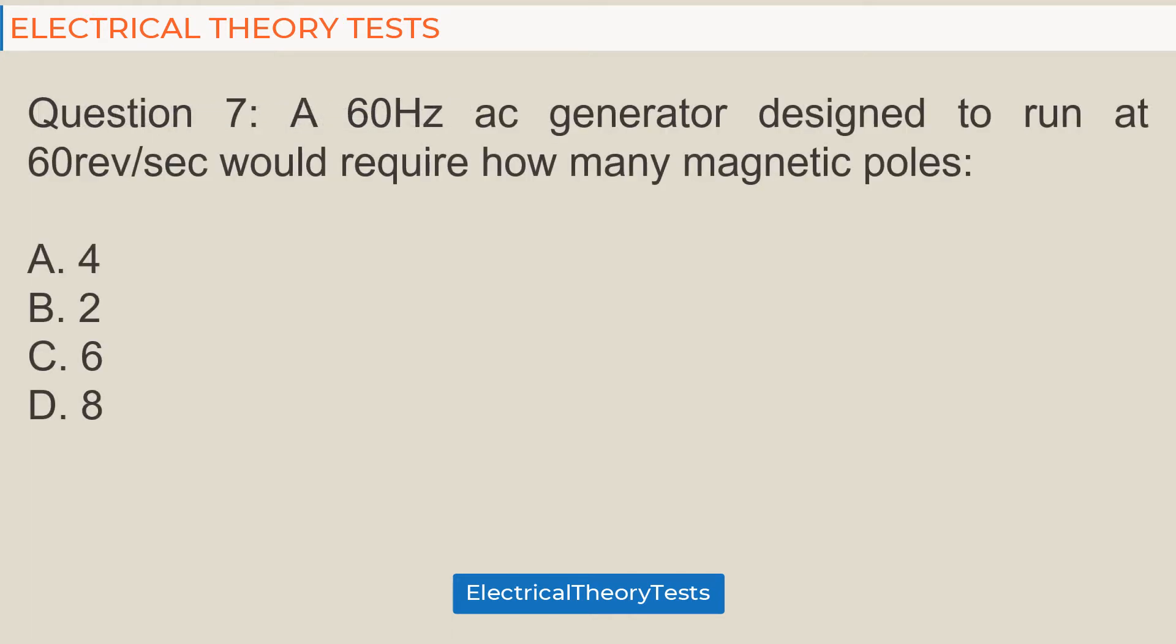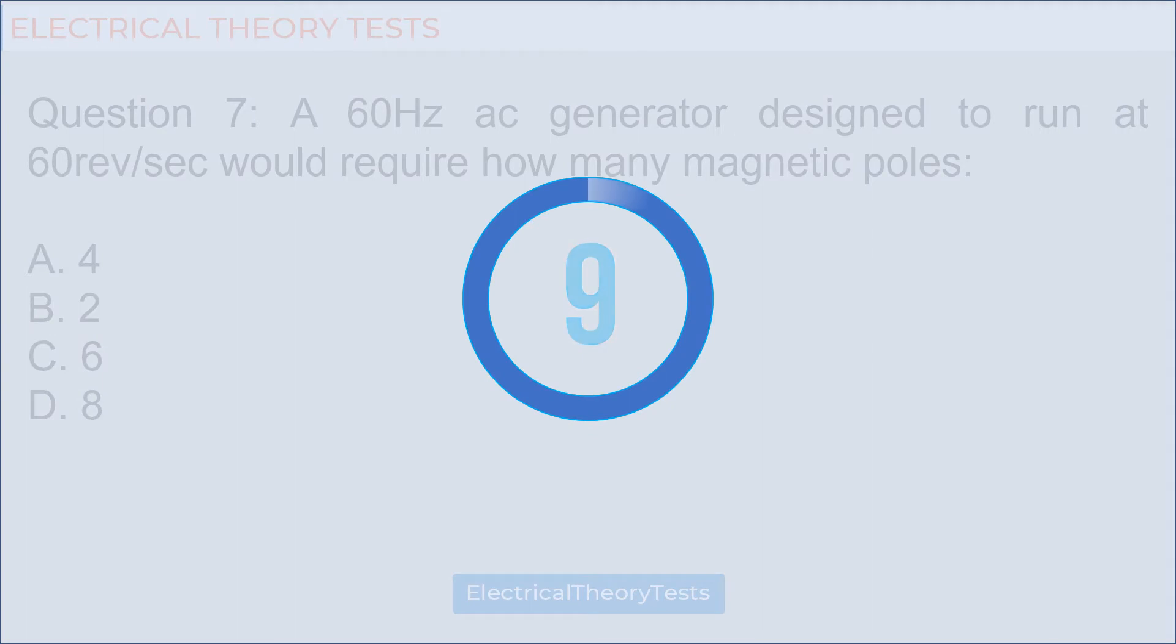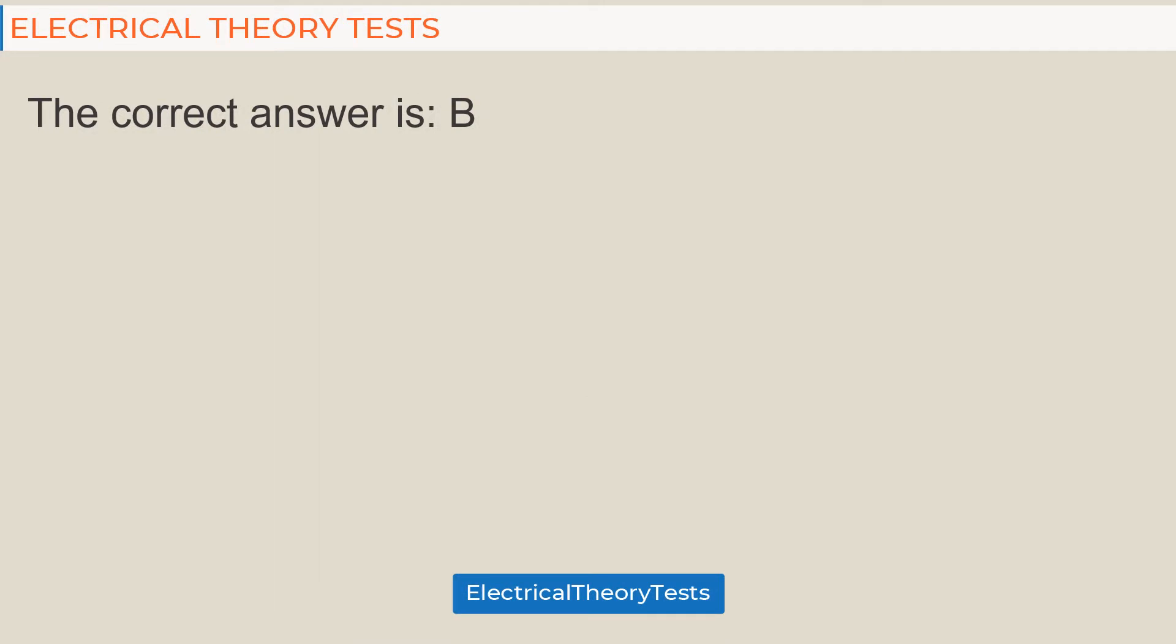Question 7: A 60 hertz AC generator designed to run at 60 rev per second would require how many magnetic poles? A: 4, B: 2, C: 6, D: 8. The correct answer is B.